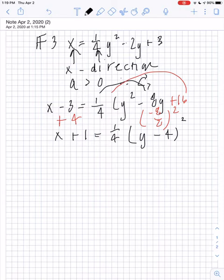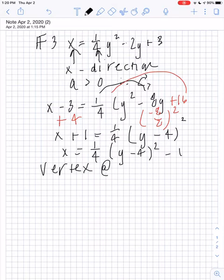Now I want to isolate the x. So I get x equals 1 fourth y minus 4 quantity squared minus 1. Normally you would say the vertex is at 4 negative 1, but it's not. It's backwards, so the vertex of this parabola is at negative 1, 4.